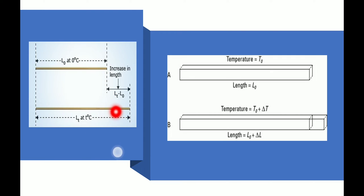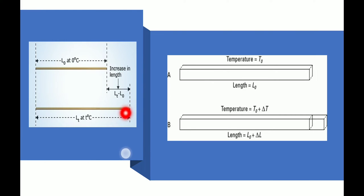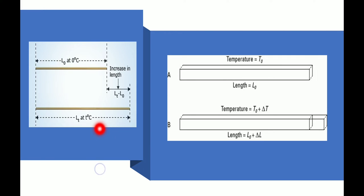If I ask you how much the rod has increased in length, you will simply subtract the smaller value from the bigger value — that means L_T minus L₀. This L_T minus L₀ is the increase in length. If I ask you to find the increase in temperature: initial temperature is 0°C, final temperature is T°C, so the increase in temperature is T minus zero, which equals T.